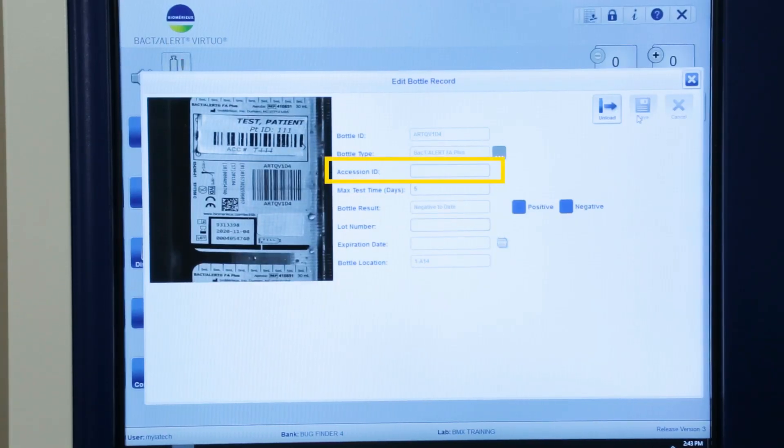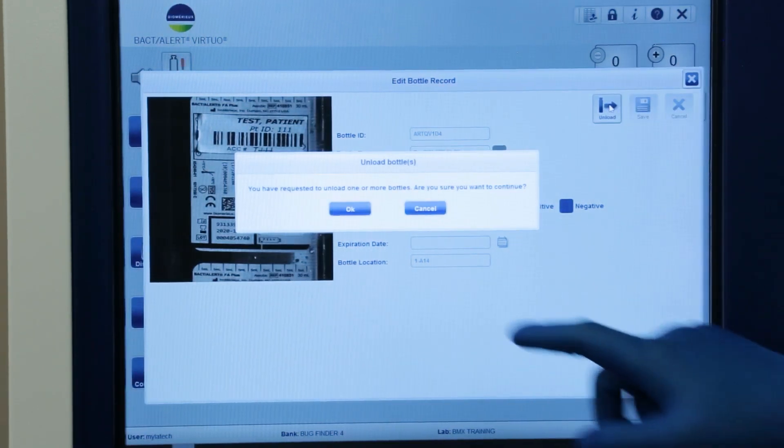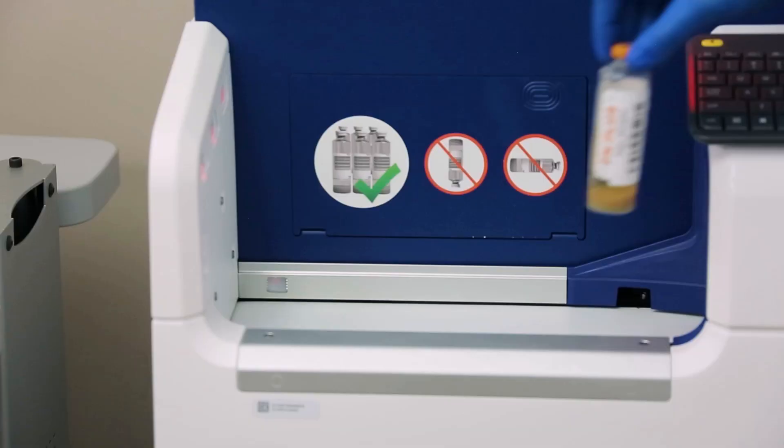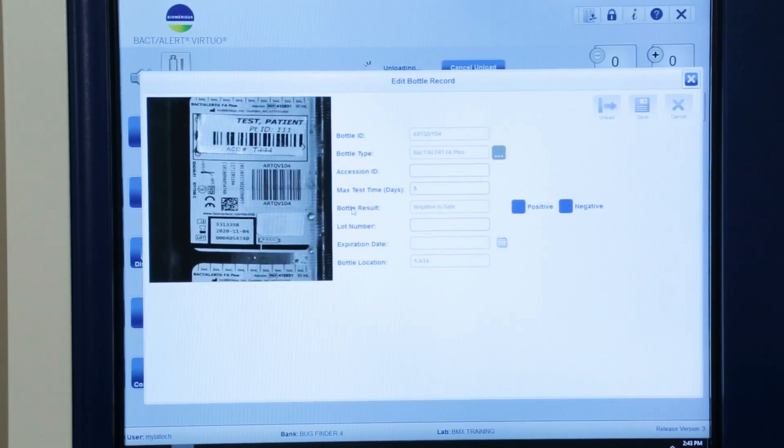If the accession number is not visible, press the unload icon to retrieve the bottle. If the accession number is available, relabel and reload the bottle. If no accession number is available, handle according to your institution's policy.